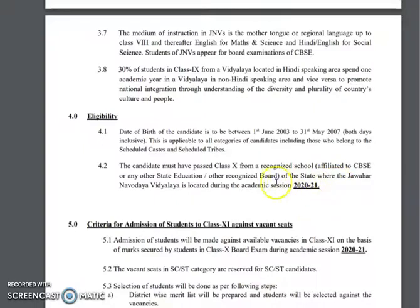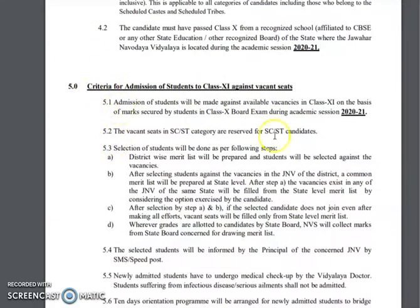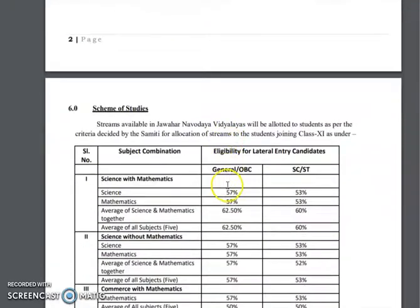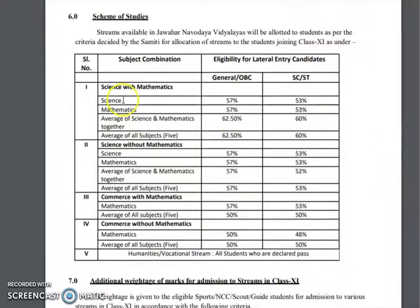Regarding vacancies, there will be reservations. Subject combinations available include: MPC — science with mathematics, average of 5 subjects; science without mathematics; commerce with mathematics; and commerce without mathematics. These are the subject combinations for lateral candidates.